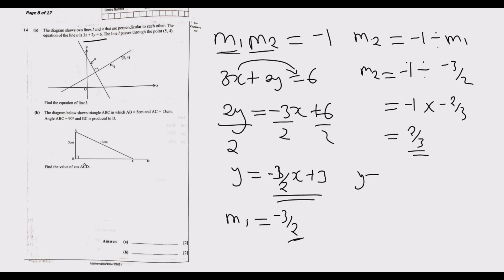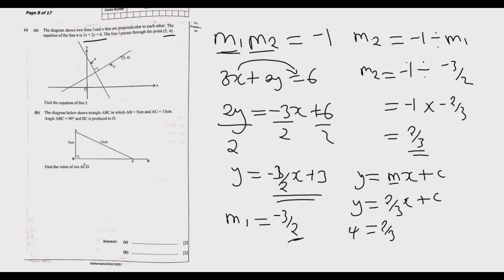Using the general straight-line formula y equals mx plus c, where m is the gradient: we have y equals 2 over 3 times x plus c. The line passes through the point (5, 4), so substituting: 4 equals 2 over 3 times 5 plus c, which gives 4 equals 10 over 3 plus c.